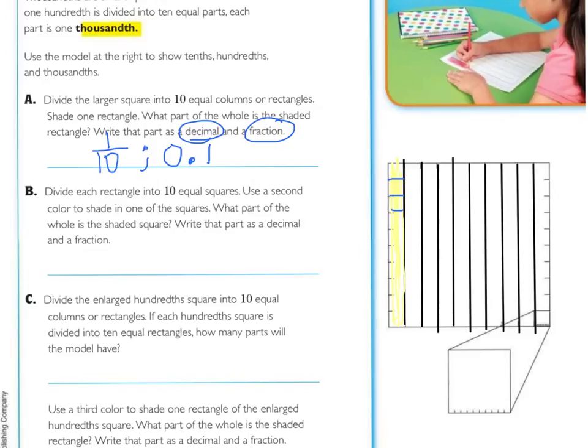If you can, try to answer the question, what part of the whole is the shaded square? And write it as a decimal and a fraction.